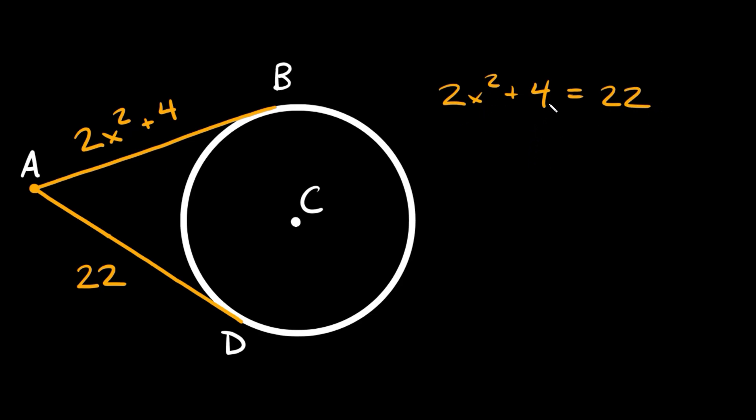So to solve for x over here, let's see, let's get rid of this 4. So we have 2x squared is equal to 18, then we can divide both sides by 2.